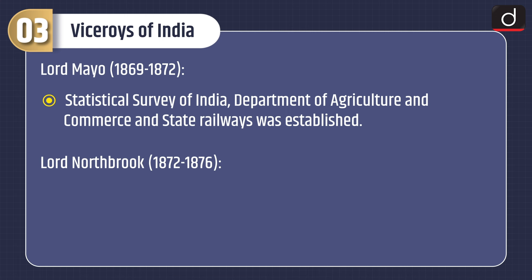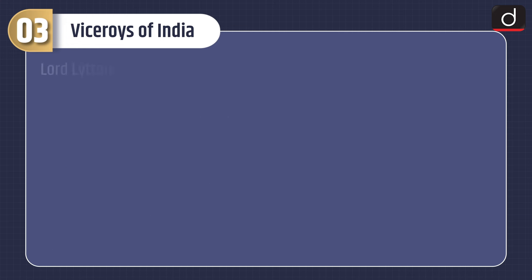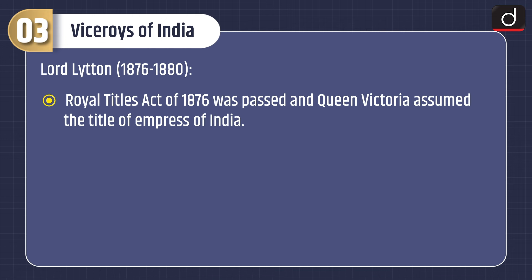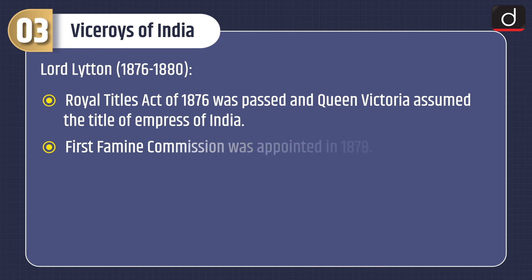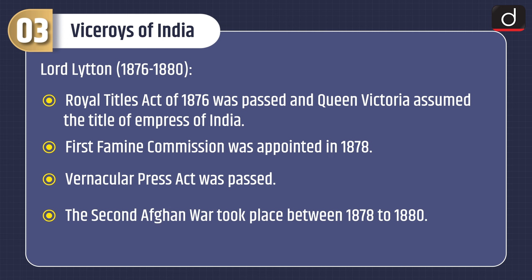Lord Northbrook, 1872–1876: the Kuka Revolt took place in 1872. During his tenure the Prince of Wales visited India in 1875. The Brahmo Marriage Act was passed. Lord Lytton, 1876–1880: the Royal Titles Act of 1876 was passed and Queen Victoria assumed the title of Empress of India. The First Famine Commission was appointed in 1878. The Vernacular Press Act was passed. The Second Afghan War took place between 1878 and 1880. The Arms Act of 1878 was passed.